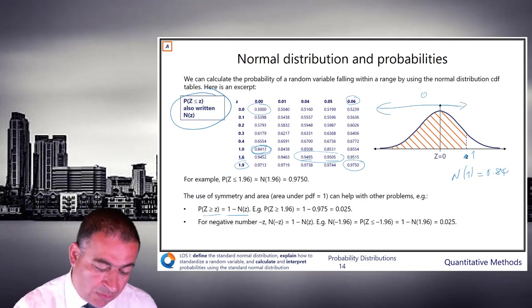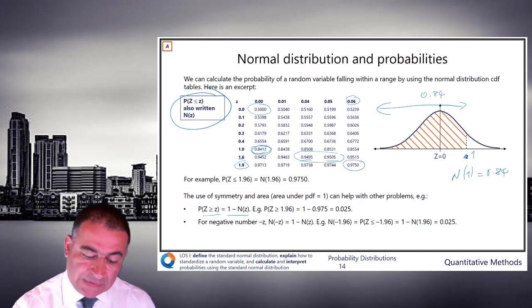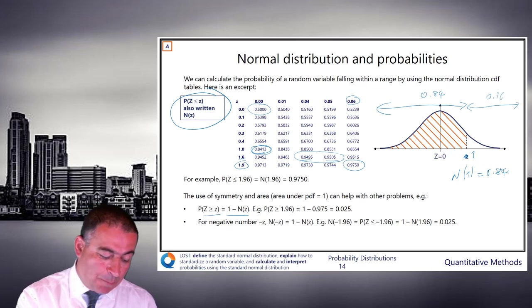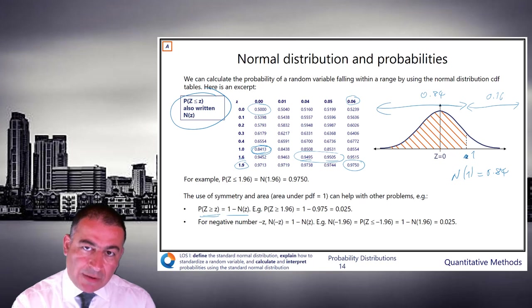There's your 0.84, your 84%. And therefore, the top bit must be 16%. So the probability that z is bigger than 1 is 1 minus the probability that it's smaller than 1, which is kind of obvious.